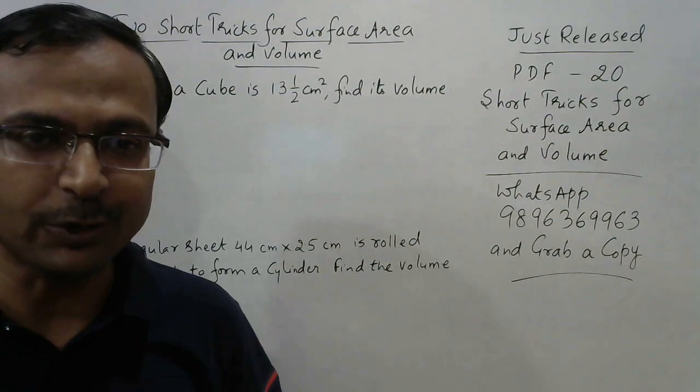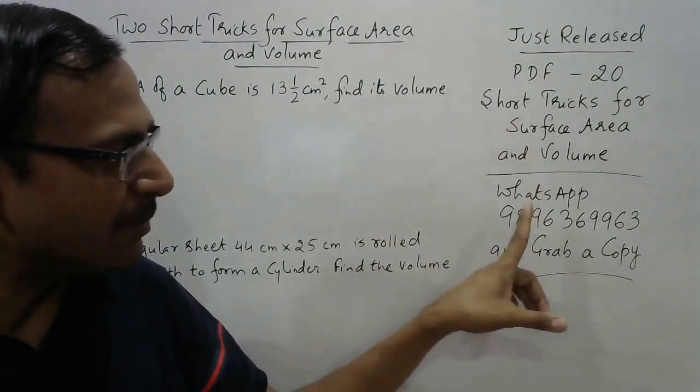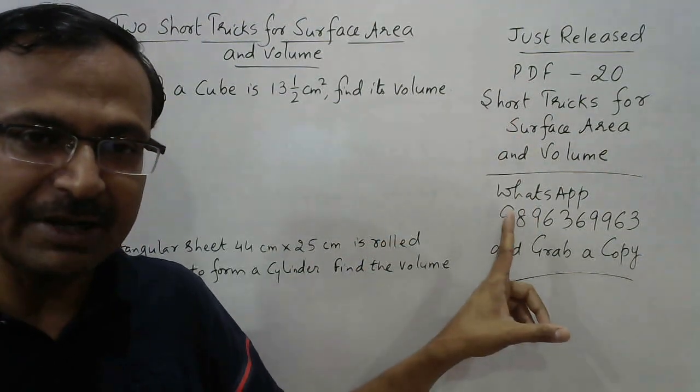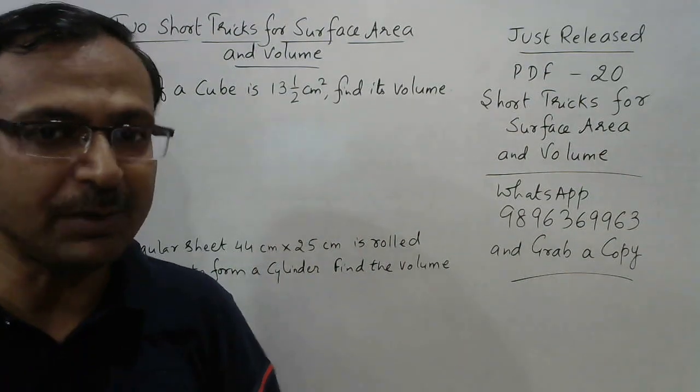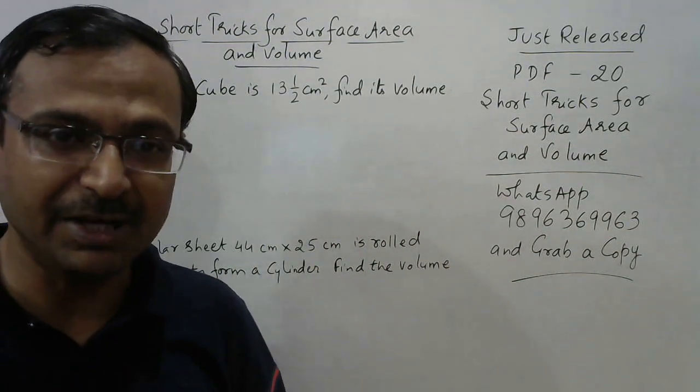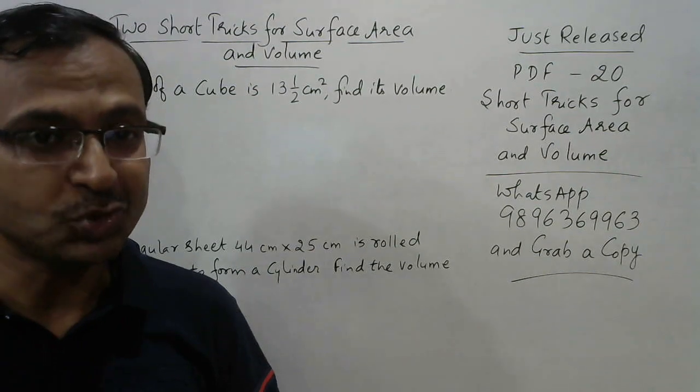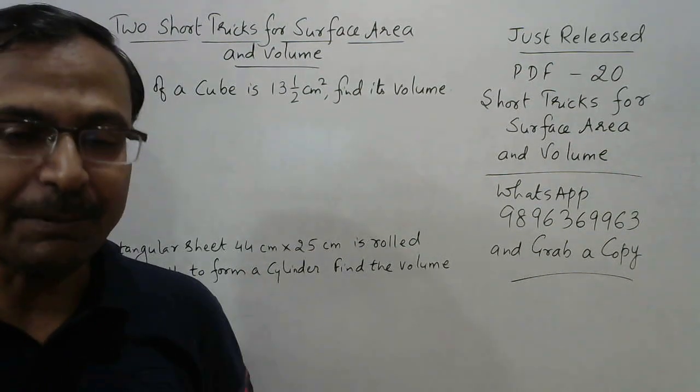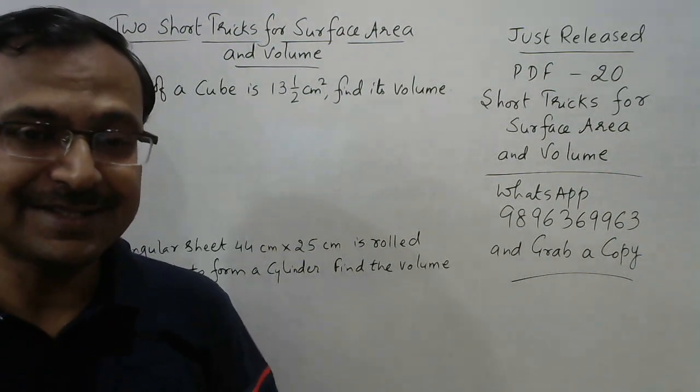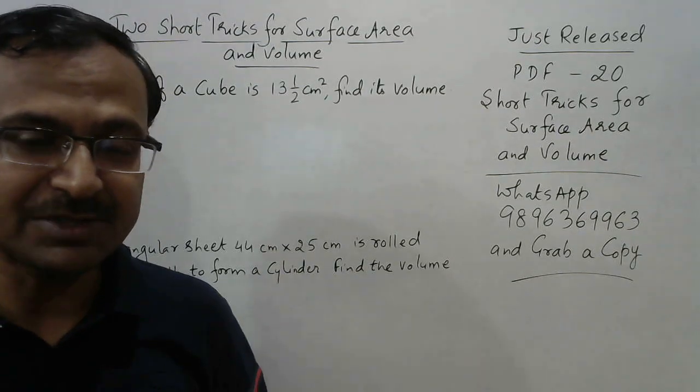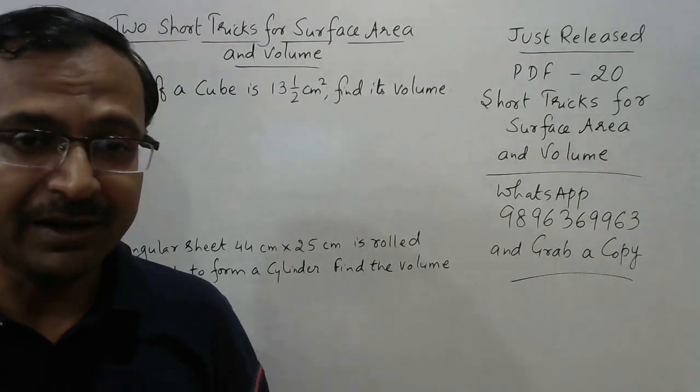Even at school level, students can check their answers using the short tricks. My WhatsApp number is 9896369963 - you can send me a message on WhatsApp if you want to grab a copy of this PDF number 20. Nineteen more PDFs cover the entire quantitative aptitude portion for SSC and RRB exams.